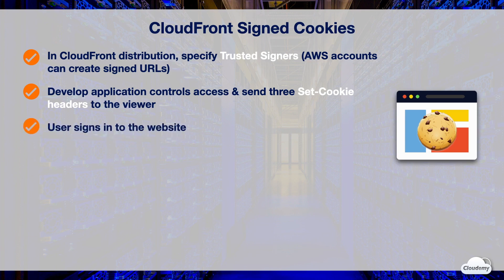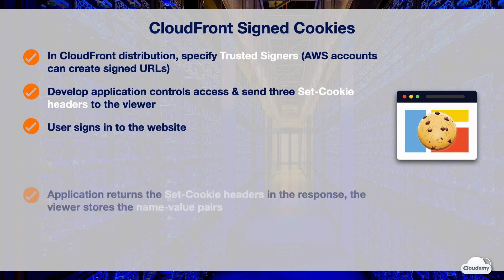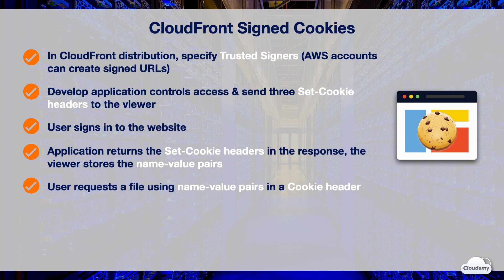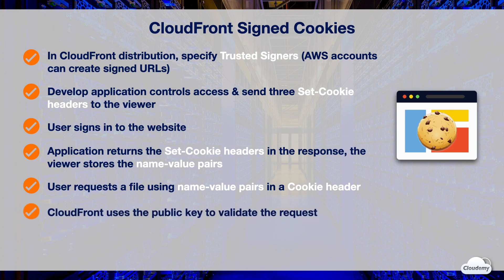When a user signs into your website and meets the requirements to access restricted files, the application returns the Set-Cookie headers in the response, and the viewer stores the name-value pairs. When a user requests a file, the browser gets the name-value pairs returned from the application and adds them to the request in a cookie header, which composes the signed cookie. CloudFront uses the public key to validate the signature in the signed cookie and to confirm that the cookie hasn't been tampered with. If the signature is invalid, the request will be rejected. If the signature in the cookie is valid, CloudFront looks at the policy statement in the cookie to confirm that the request is still valid. If the request meets the requirements in the policy statement, CloudFront serves the content to the user.